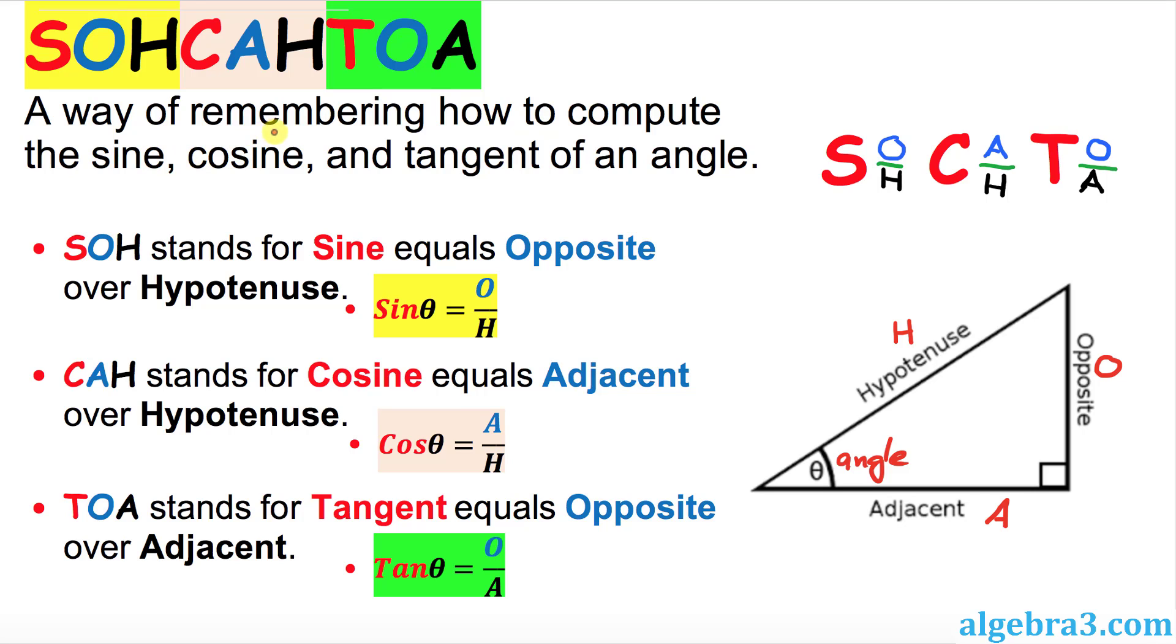As you can see in this definition, SOHCAHTOA is just a mnemonic tool that we usually use to compute sine, cosine, and tangent of an angle. Look at this right triangle with angle theta - it has three legs: one leg is called adjacent represented by A, the opposite side is O, and the longest leg is called hypotenuse represented by H. The way my students remember SOHCAHTOA is this way.